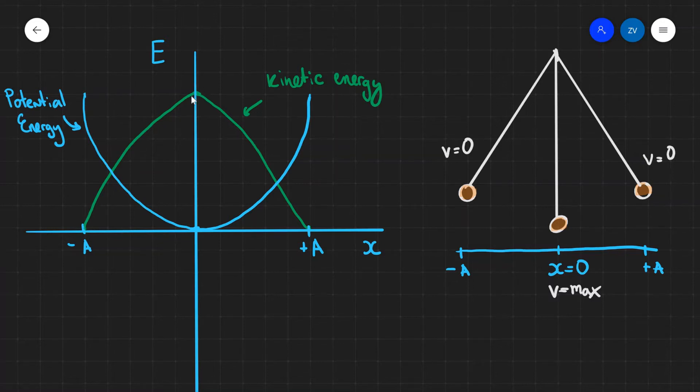The kinetic energy is at maximum when x equals zero, which is just over here. And once again, the kinetic energy drops back to zero at the amplitude.